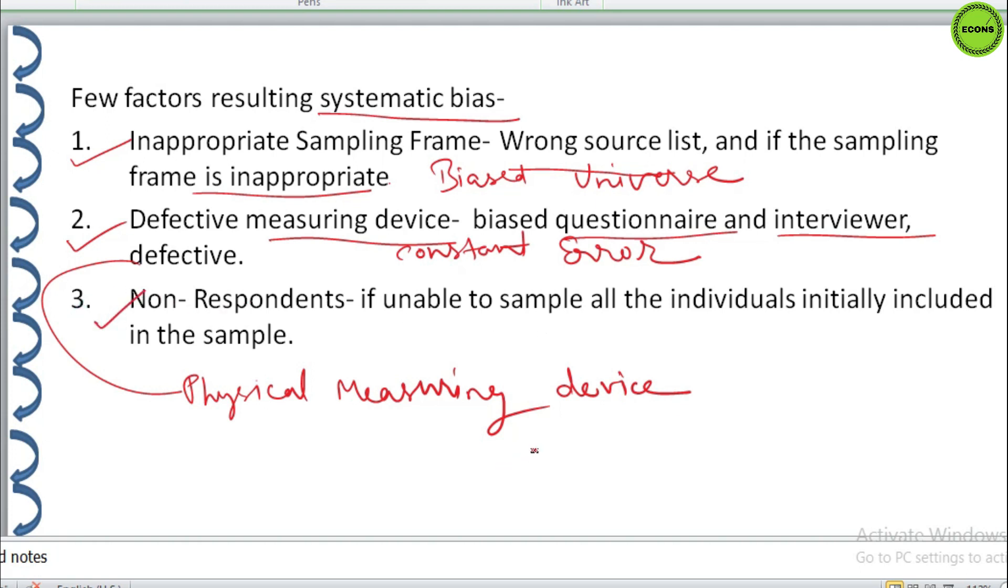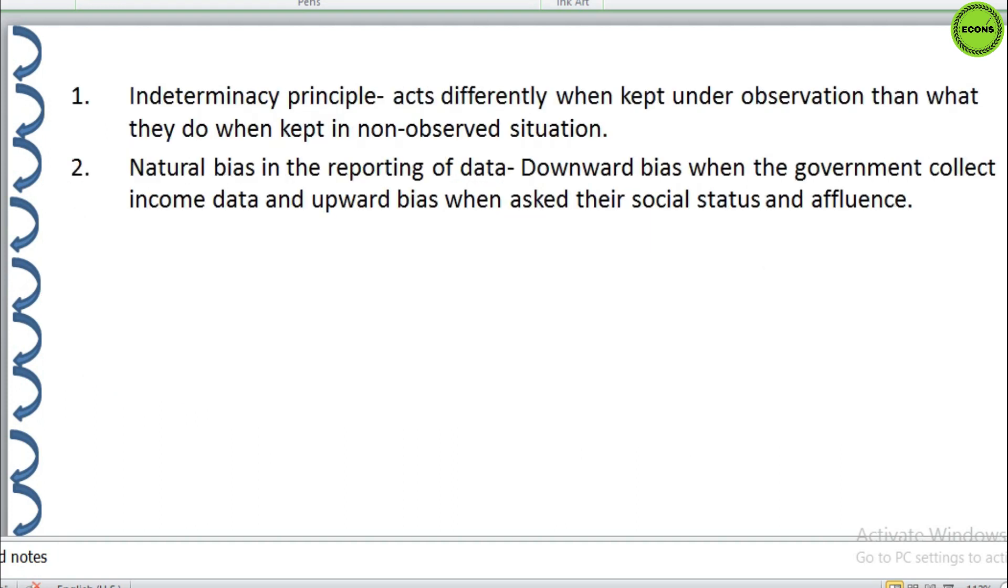Another point is non-respondence. Suppose you have chosen sample size from the source list and unable to sample all the individuals initially included in the sample. There may arise a systematic bias too. The reason is that in such a situation, the likelihood of establishing contact or receiving a response from an individual is often correlated with the measure of what is to be estimated.